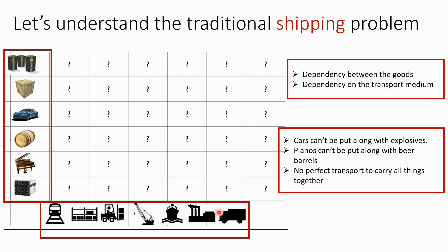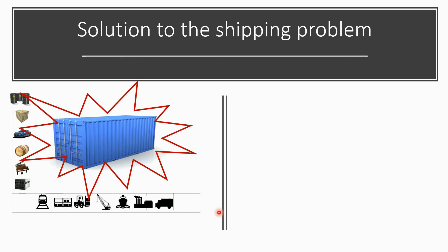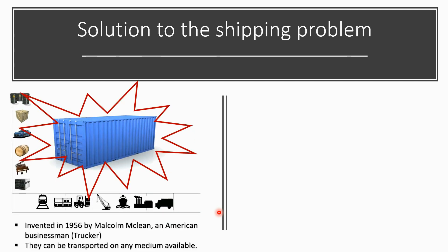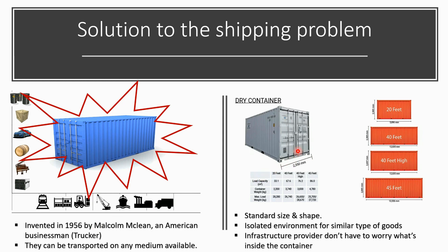That's the traditional shipping problem. The solution came with the advent of shipping containers, invented in 1956 by Malcolm McLean, an American trucker and businessman. The good thing about these containers is they can be transported on any medium available — trucks, trains, ships, anything. He standardized the dimensions of the container — the standard size and shape has been decided.